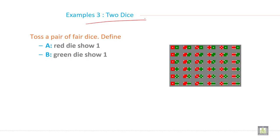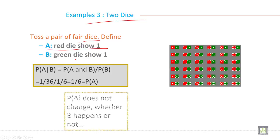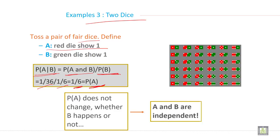Toss a pair of dice and define A as the red die shows 1 and B as the green die shows 1. So probability of A given B equals probability of A and B divided by probability of B. It is 1/36 divided by 1/6, which equals 1/6 — that is the probability of A. Probability of A does not change whether B happens or not, so A and B are independent events here.